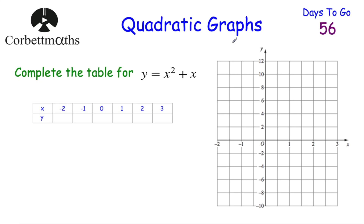Let's start by looking at drawing quadratic graphs. Here we've got the graph y equals x squared plus x, and we're going to plot and draw this quadratic. We've got an xy table with our x coordinates, so let's find our y coordinates. To find the y coordinates, we're going to square the x coordinate and then add the x coordinate again.